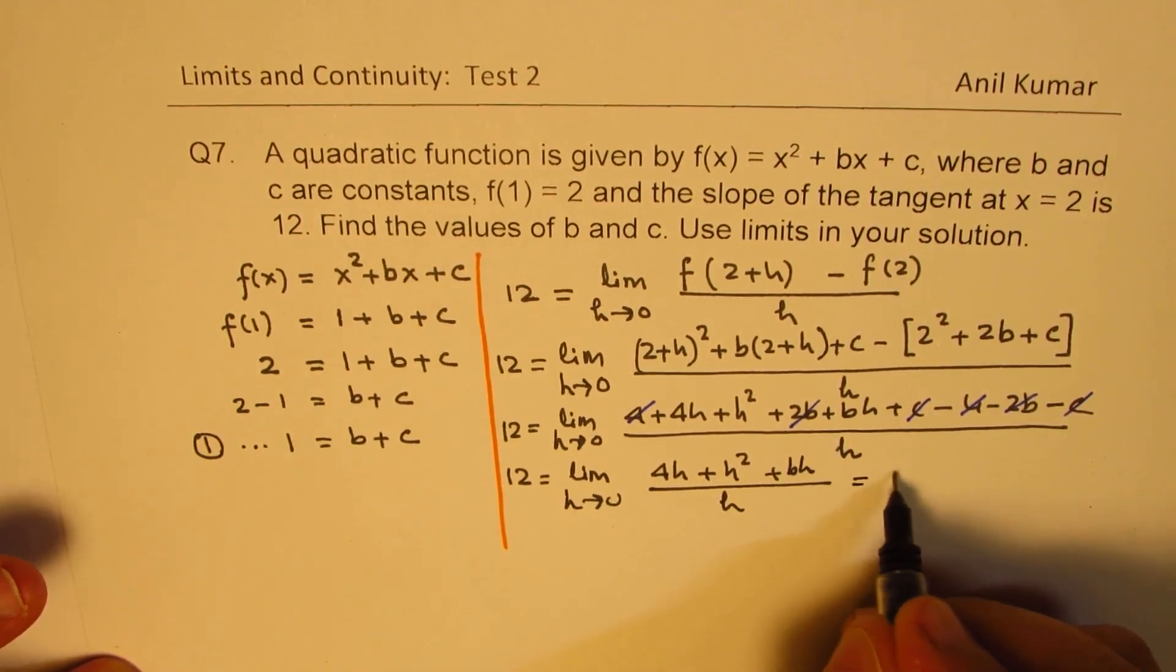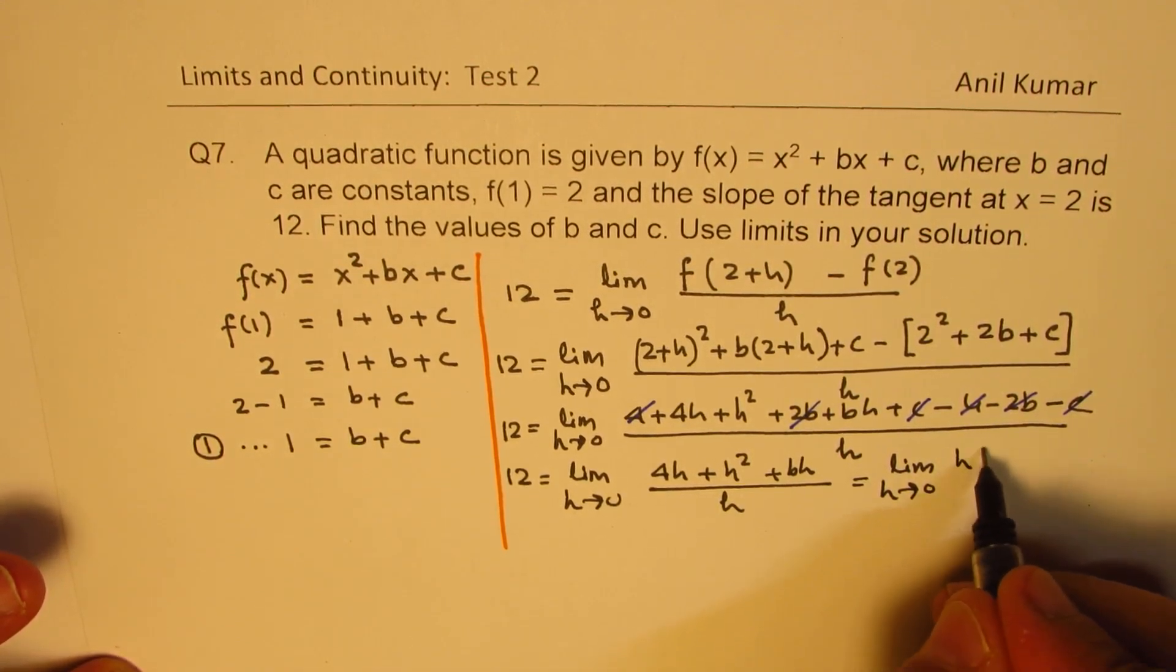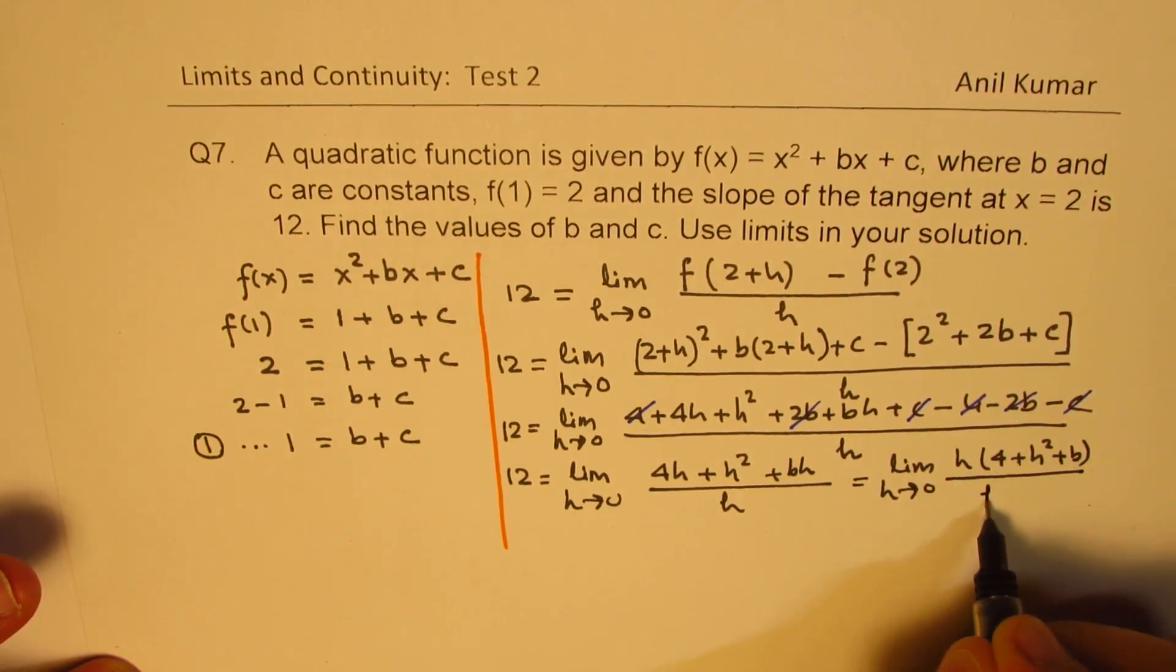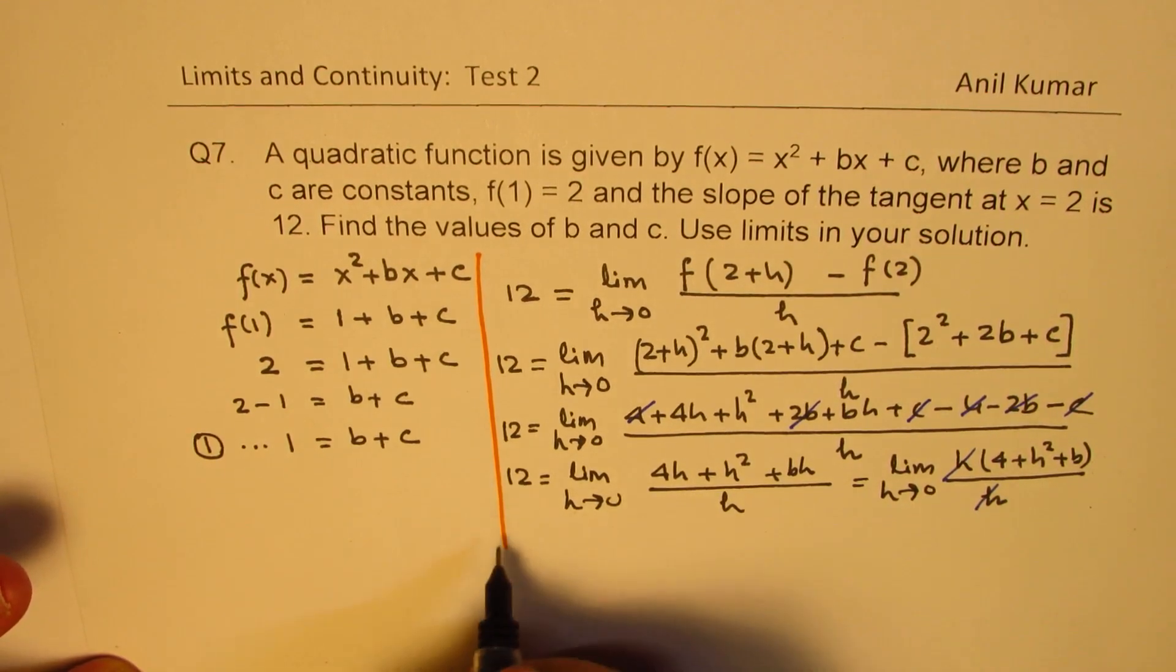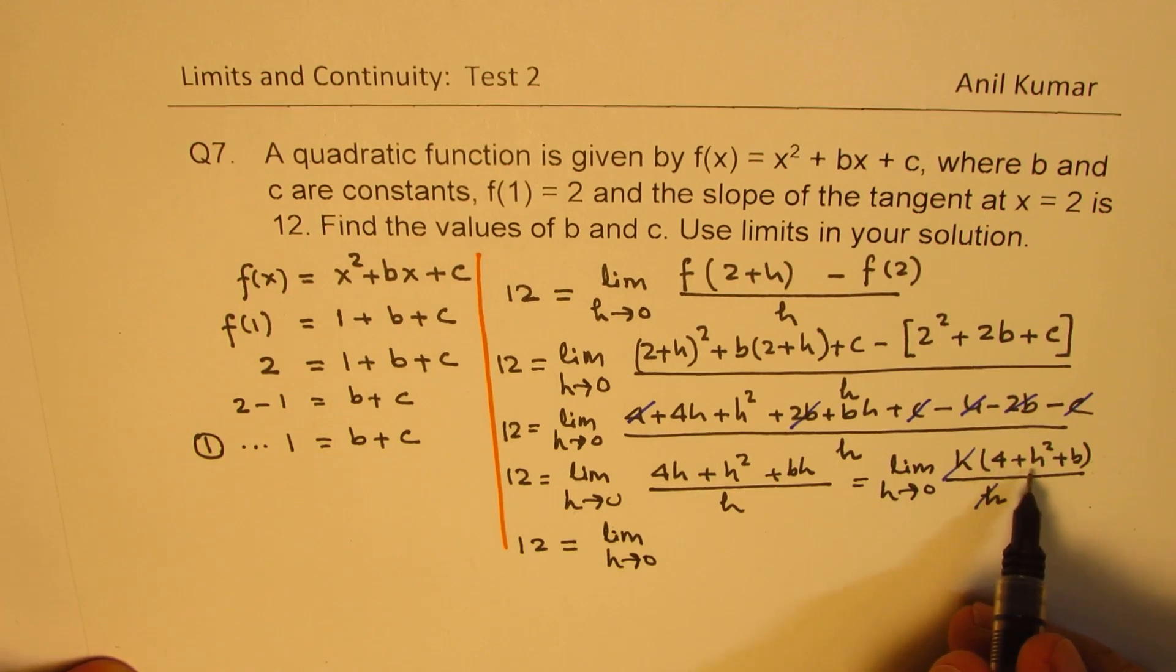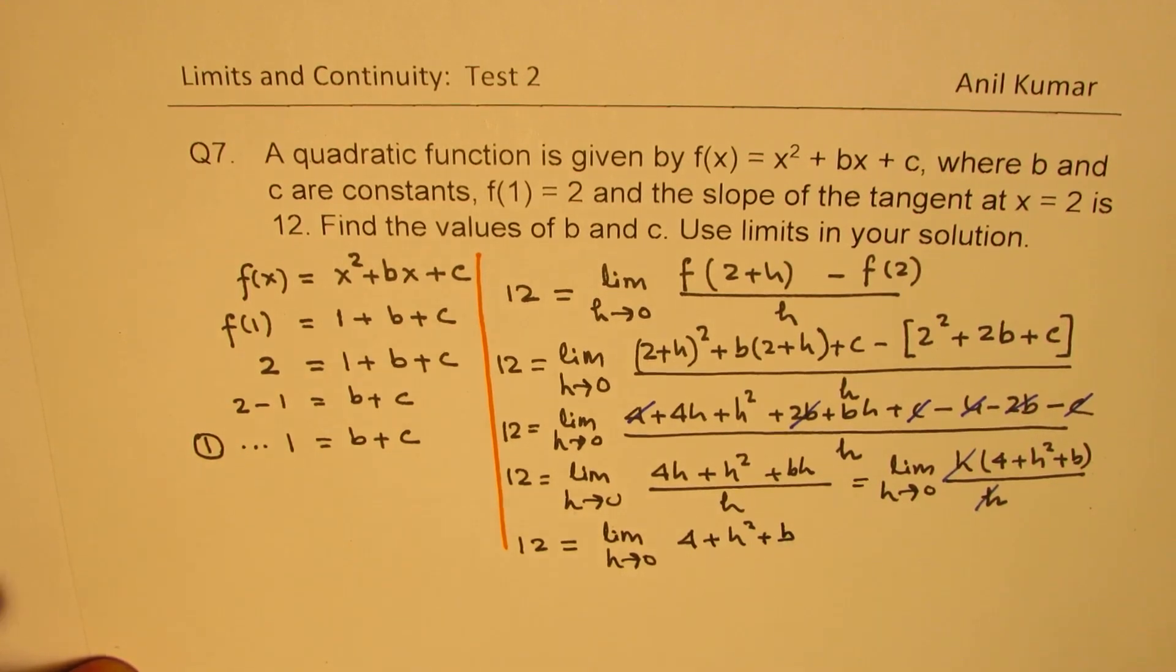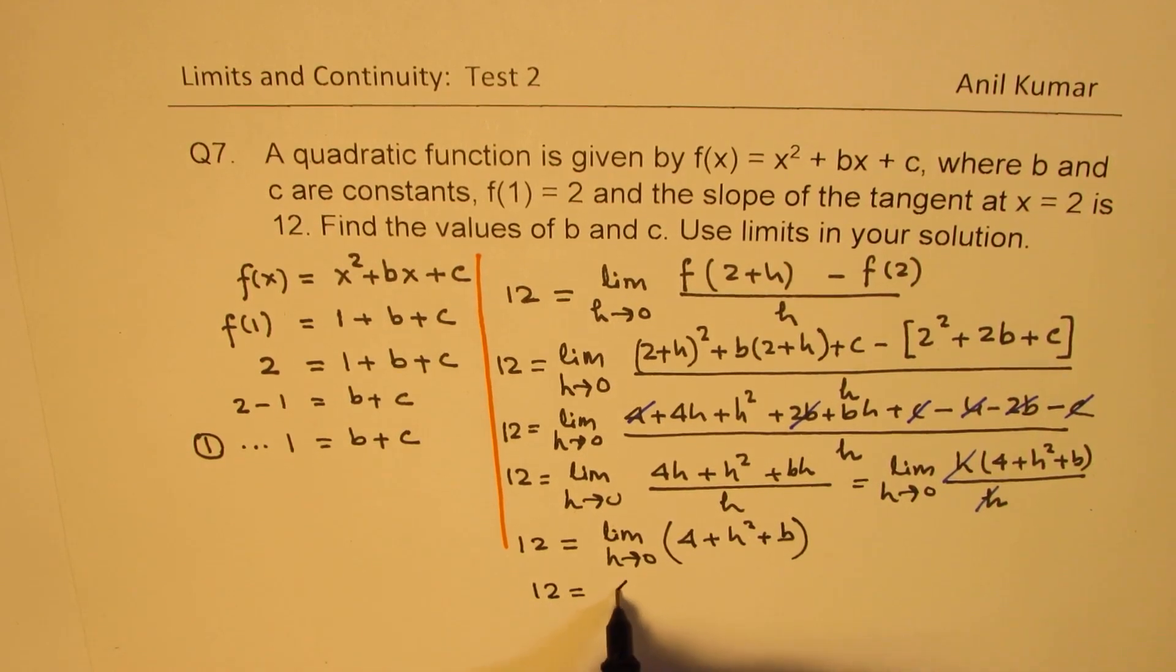So h is common. So I could write this as limit h approaches 0: h(4 + h + b)/h. So now we can cancel h and h. And so what we get here is 12 = limit h approaches 0: 4 + h + b.